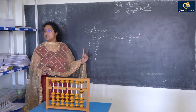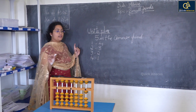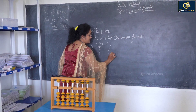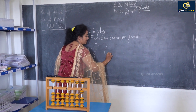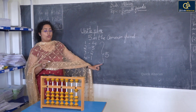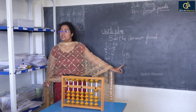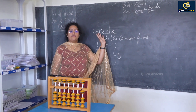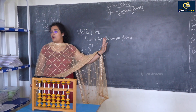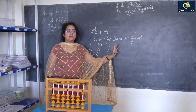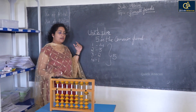After a number, finally, we are going to get the answer as 5. Now, so this is the reason why we call 5 as the common friend. Understood? Yes, ma'am.